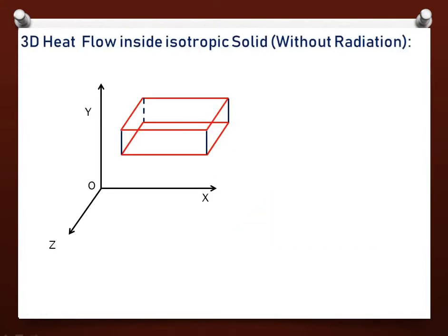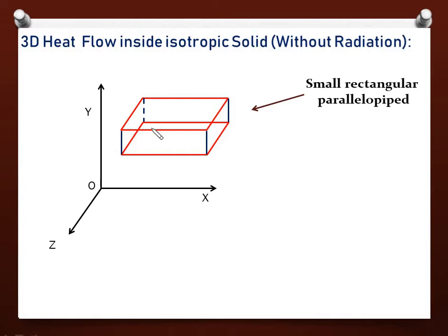Suppose heat is flowing inside an isotropic solid in all three directions and we will not consider radiation here. We will neglect the radiation part and assume that the solid is not radiating any heat. Any thermally insulated material will not radiate heat. So under that scenario, let's suppose this is a small portion of that solid in the form of a small rectangular parallelepiped, with width along x-axis as δx, along y-axis as δy, and along z-axis as δz.